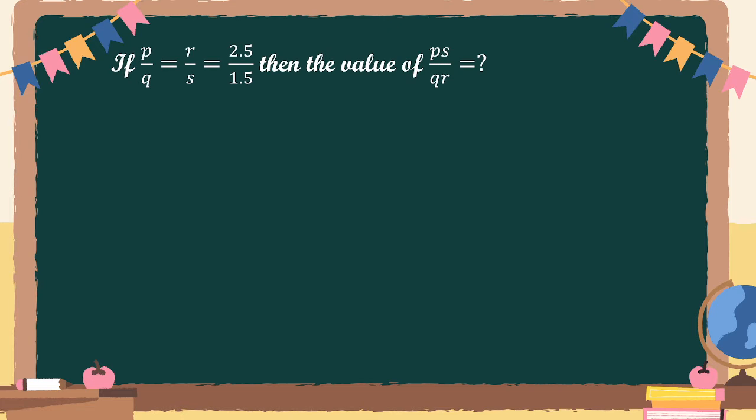The problem goes like this: if P by Q equal to R by S equal to 2.5 divided by 1.5, then we have to find out the value of PS upon QR.